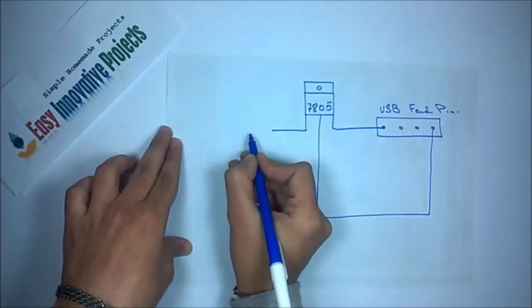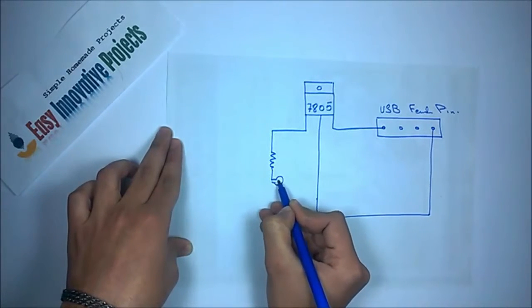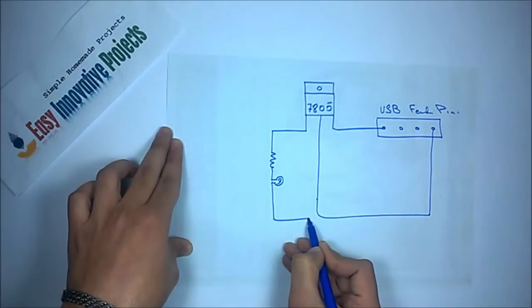1K resistor and LED attach with left side of 7805 voltage regulator and base.